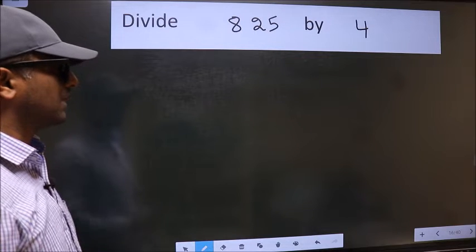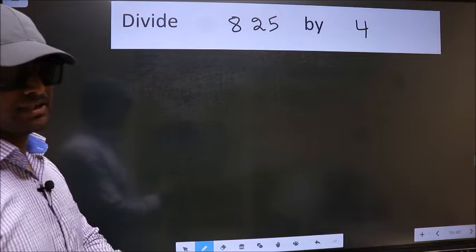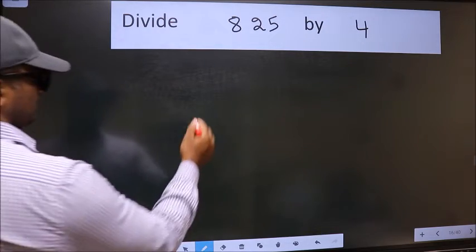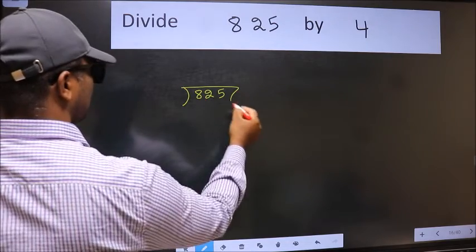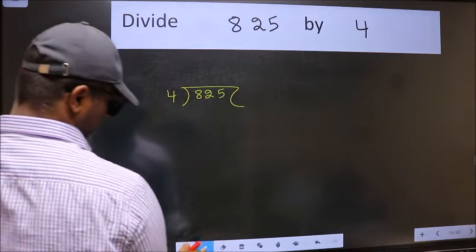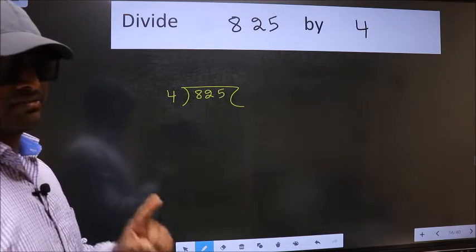Divide 825 by 4. To do this division, we should frame it in this way: 825 here and 4 here. This is your step 1.